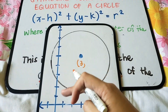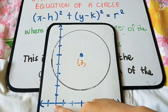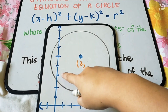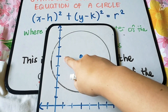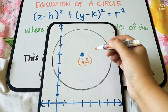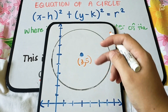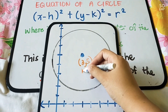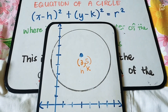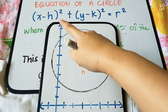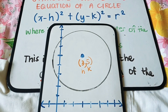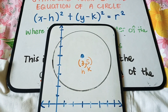Next, for y. Counting from the origin: 1, 2, 3, 4, 5. So y is at 5. We have center (3, 5). This is your h and k — this is what you will substitute into the standard form of the equation. Is it clear?